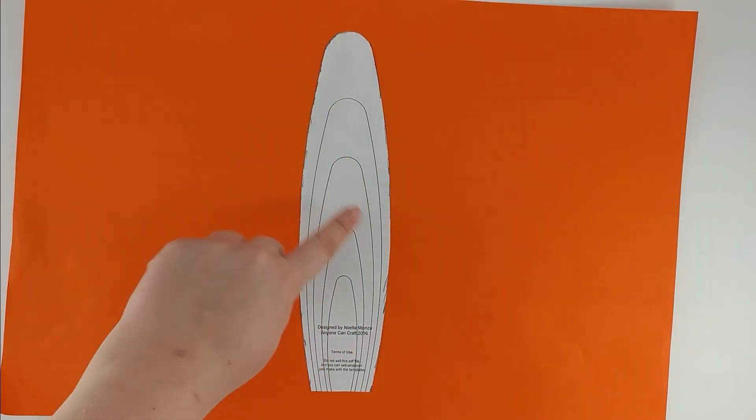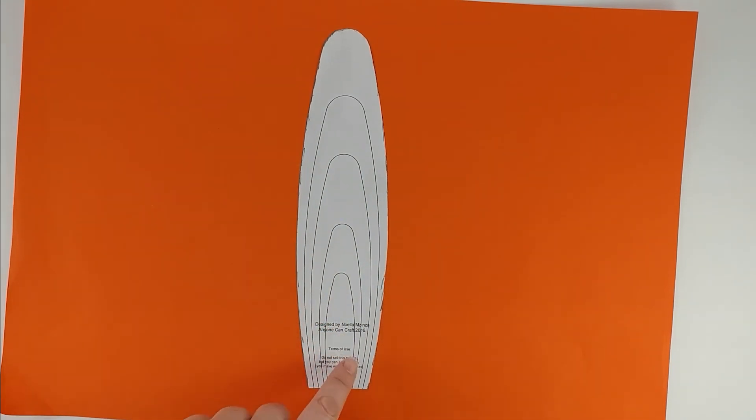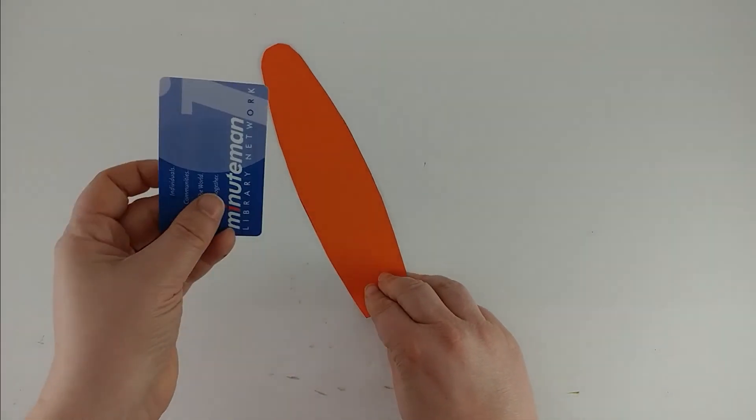You can go to her blog and download a ton of really nice different shaped petal templates. On her blog each petal size is overlapping, so what I did is trace and then cut out the next one. I've cut everything out.